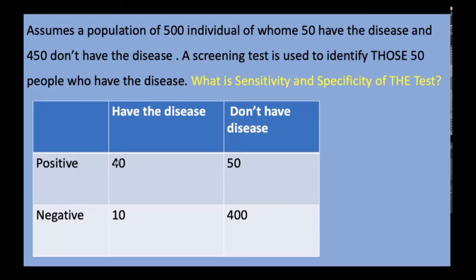Assume a population of 500 individuals, where 50 have a disease and the rest don't. A new test has been developed, and we try to identify those 50 individuals. We construct a binary table. Based on our test, we truly identified 40 individuals as positive, and the test also declared 10 additional individuals as positive. So 50 individuals in total are identified as positive. Roughly 400 individuals were identified as truly negative. However, the test also falsely accused 50 individuals as positive.